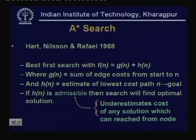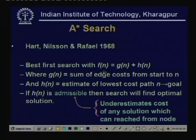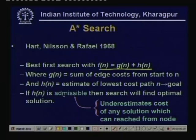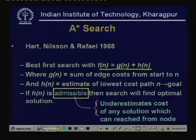Let us quickly go over A* search. A*, as we have seen in the last class, is a best-first search where we use the function f = g + h to order the nodes for expansion. The nodes are expanded according to their increasing f values. We have also seen that if h(n) is admissible then the search will find the optimal solution. A heuristic function h(n) is said to be admissible if it underestimates the cost of any solution which can be reached from the node.